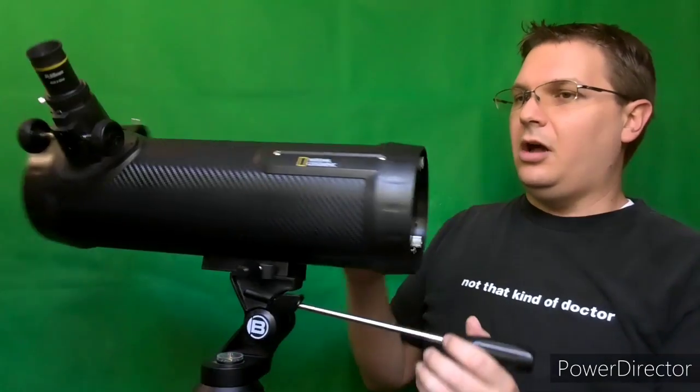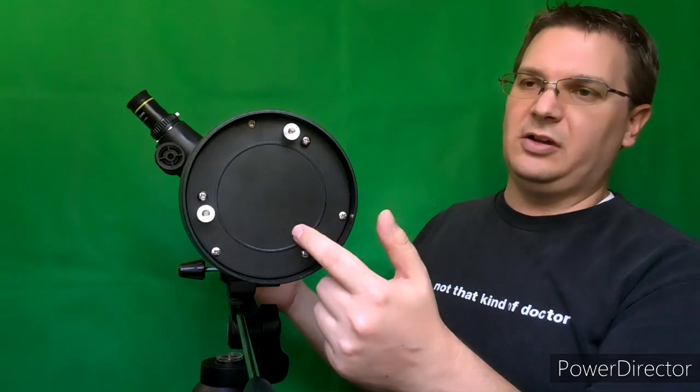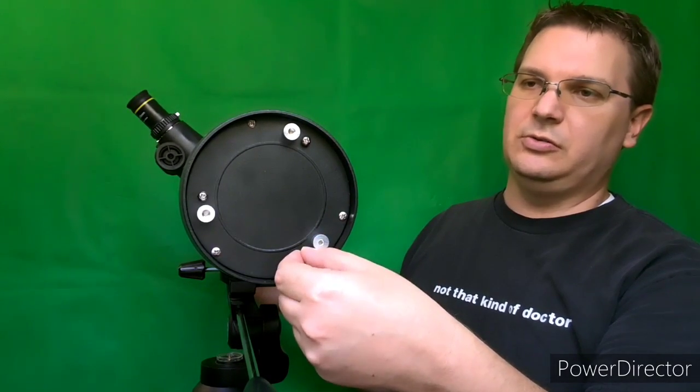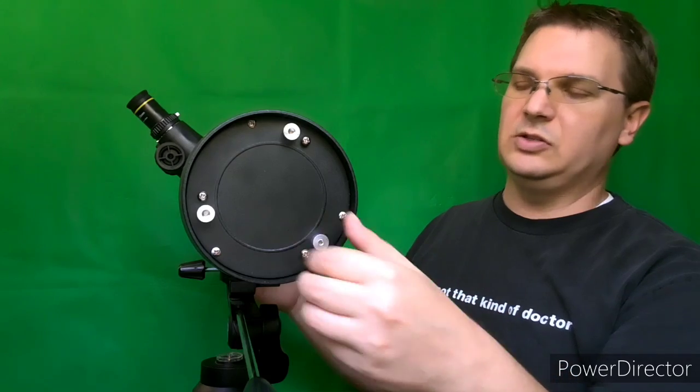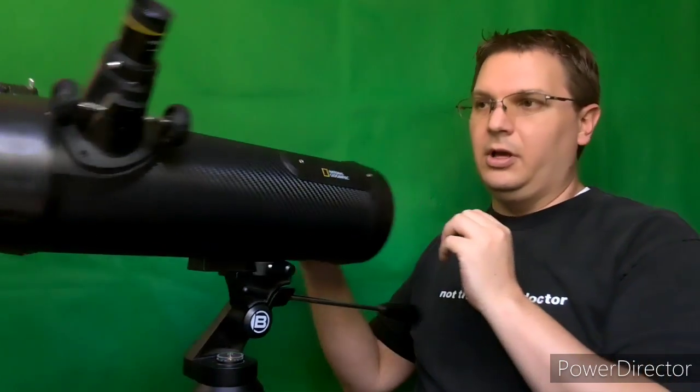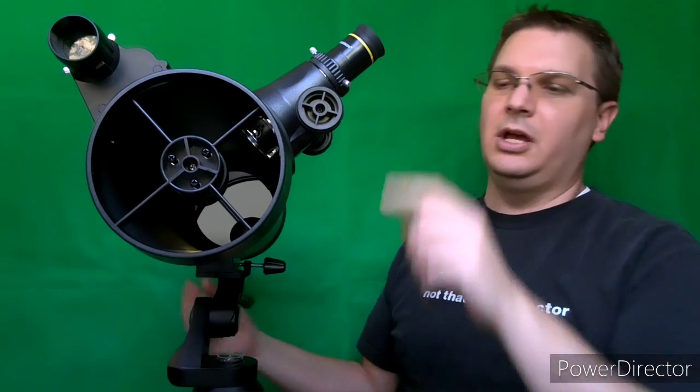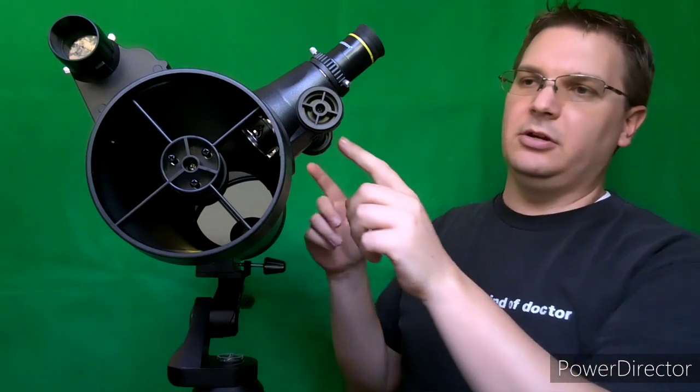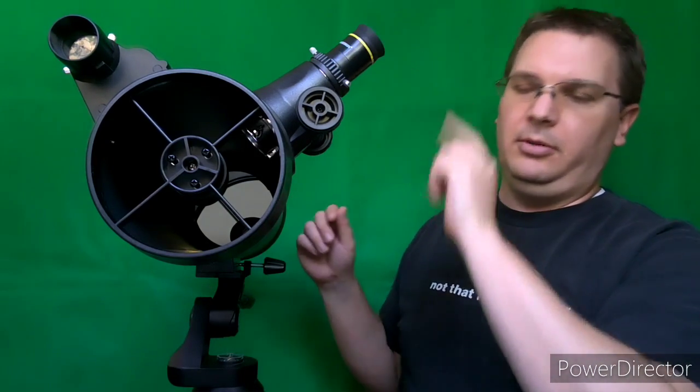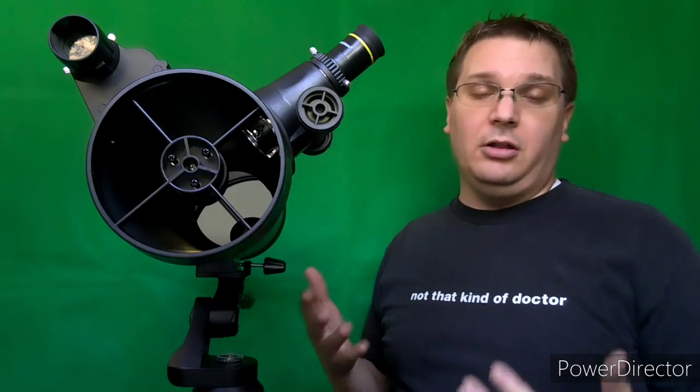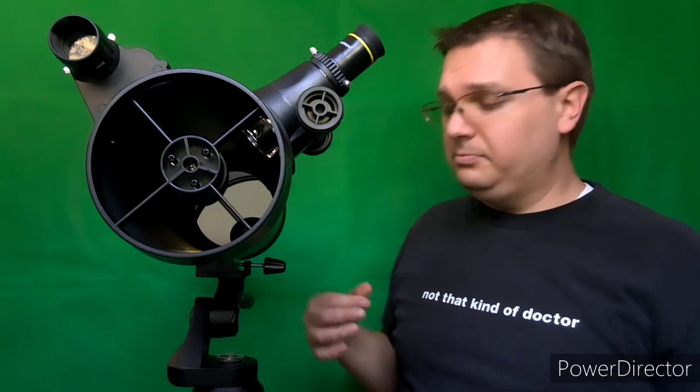Additionally you can collimate this. So it comes with these nice collimation screws. You just loosen these screws here and then you make your adjustments, tighten the screw back down and you're good to go. Make sure you do that with the proper collimating cap or a Cheshire or something in here, making sure that you align the mirrors up and get a proper image out here. Mine came collimated very nicely, looked pretty much spot on.